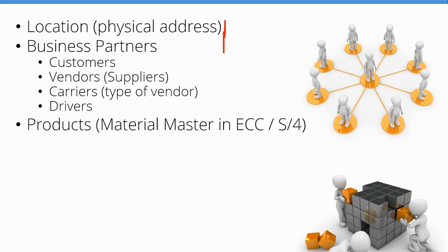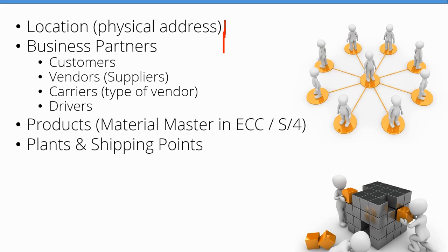Products — what you're actually shipping — are required master data in TM. Your plants and shipping points are what SAP calls the actual ship-from locations if you're doing outbound shipping, or they may be the receiving locations if you're doing inbound shipping.